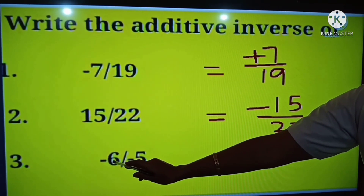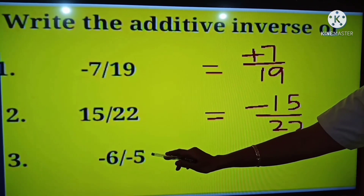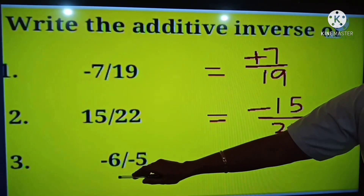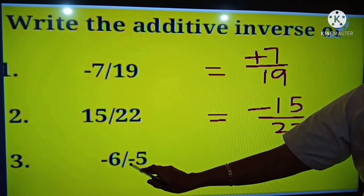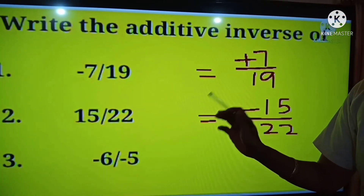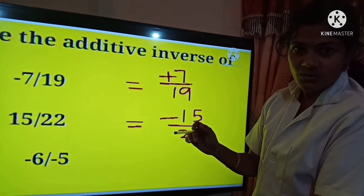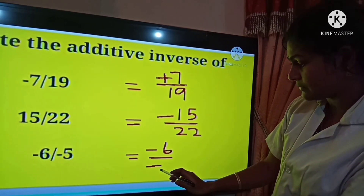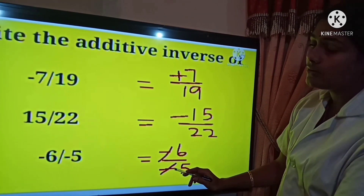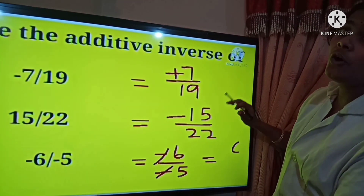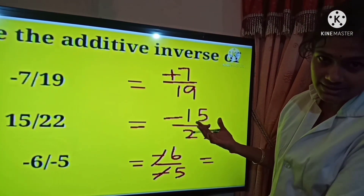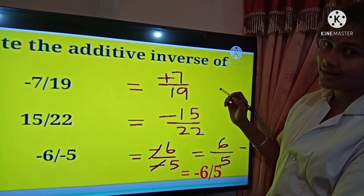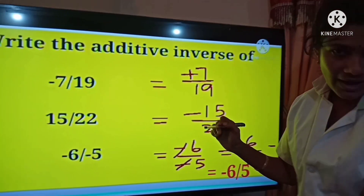Next question: minus 6 by minus 5. Here we have minus 6 in the numerator and minus 5 in the denominator. We cancel the minus and minus, so we get positive 6 by 5. Now for this number we take the additive inverse. Since 6 by 5 is positive, the additive inverse is minus 6 by 5.